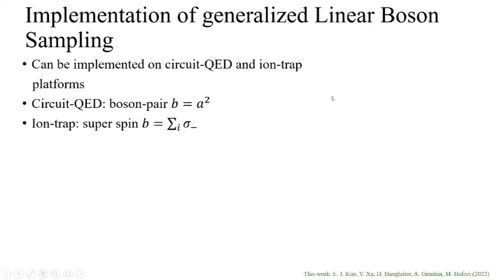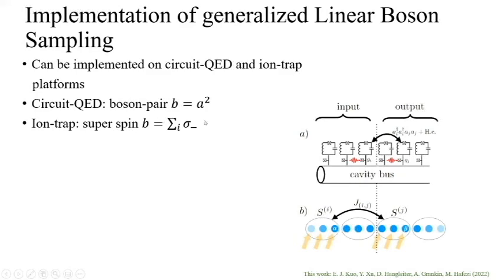Let's talk about our examples. Our scheme can be implemented on circuit QED and ion trap platforms. For circuit QED, the boson pair is B equals A squared. For ion trap, we can use spin half to construct the super spin. We separate into input mode and output mode. This is for the cavity; this is for the ion trap.